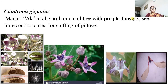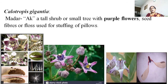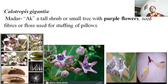Calotropis gigantea (madar or aak in English) is a tall shrub or small tree with purple flowers; seed fibres and floss are used for stuffing pillows. Here the gynostegium condition is visible and stamens are reduced into the form of translators.